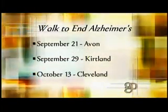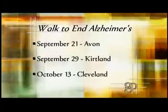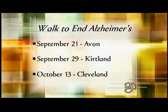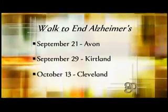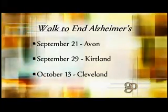The Alzheimer's Association is a great organization that supports so many people, and there are ways we can support it too. One of the ways to support our 1-800 helpline and other free services is by participating in our Walk to End Alzheimer's. This year we have three opportunities: the first is in Avon on September 21st, the second is in Kirtland on September 29th, and the last is downtown on October 13th. Our helpline staff will be happy to answer any questions about warning signs or talk about the Walk with you.